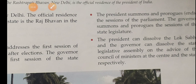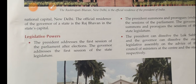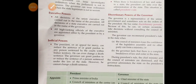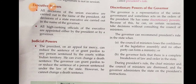What are the executive powers of the President? All decisions of the Union Executive are carried out in the name of the President, and all decisions of the State Executive are carried out in the name of the Governor. All high-ranking officials of the Executive are appointed either by the President or by the Governor.